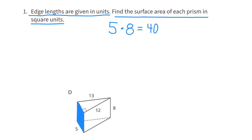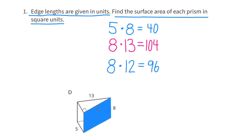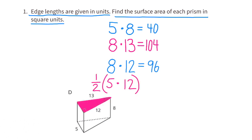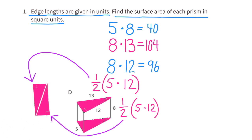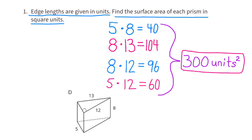Prism D. One side has dimensions 5 by 8, so its surface area is 40 square units. Another side has dimensions 8 by 13, giving a surface area of 104 square units. One side has dimensions 8 by 12, giving a surface area of 96 square units. The top and bottom bases are triangles with dimensions 5 by 12. We can treat the two triangles as one rectangle: 5 times 12 gives a combined area of 60 square units. Adding all these, the surface area for Prism D is 300 square units.